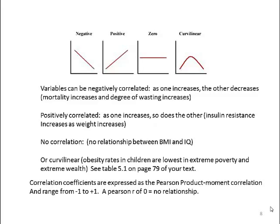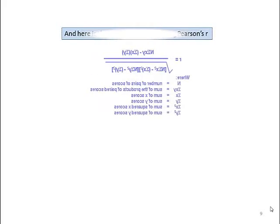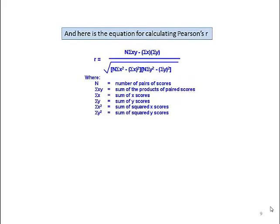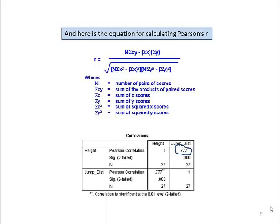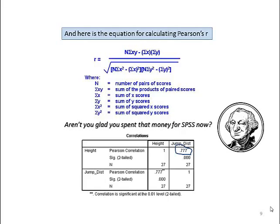Correlation coefficients are expressed as Pearson product moment correlation, usually represented with a little r, and they can range from minus 1 to plus 1. A Pearson r of 0 means no relationship; plus 1 is a strong positive relationship; negative 1 is a perfect negative relationship. Here is the equation for calculating Pearson's r, and here is the SPSS output — you can see I've circled Pearson's r as 0.77. Aren't you glad you spent that money for SPSS?